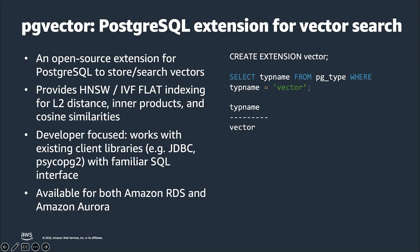PG Vector is an open source extension for Postgres to enable vector search. It enhances the core Postgres engine in two ways: first, it adds a new data type called vector; second, it provides indexing techniques — HNSW and IVF flat — for three different distance strategies: L2 distance, inner product, and cosine similarity. As of this recording, PG Vector supports up to 16,000 vector dimensions, and vectors with up to 2,000 dimensions can be indexed. PG Vector is supported on both RDS for Postgres and Aurora Postgres Compatible Edition.